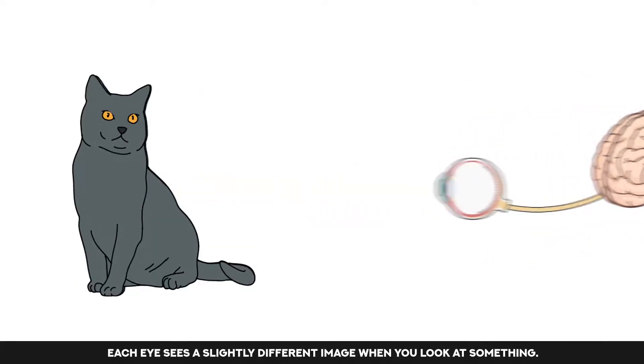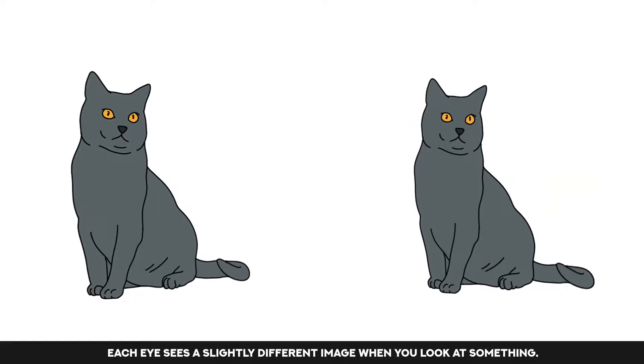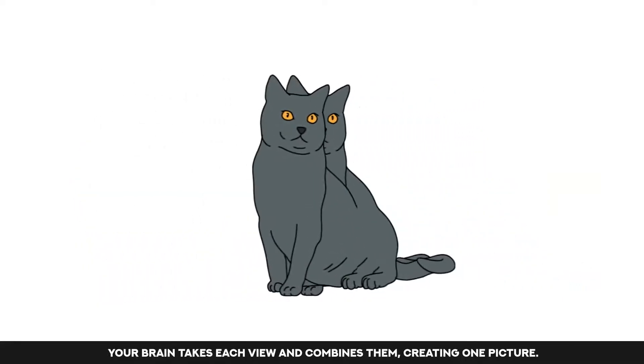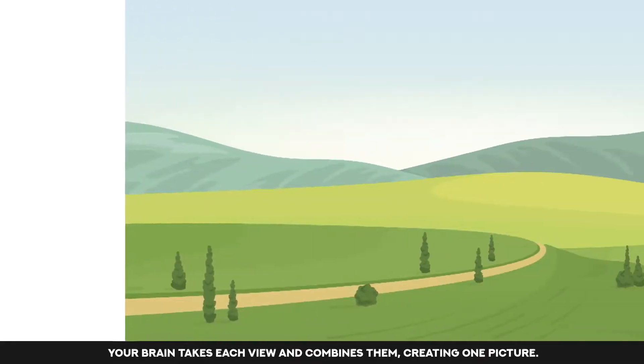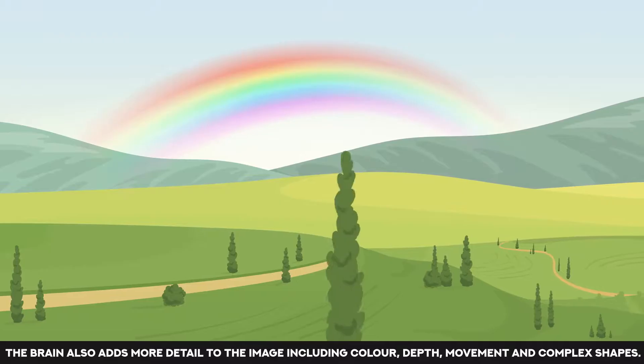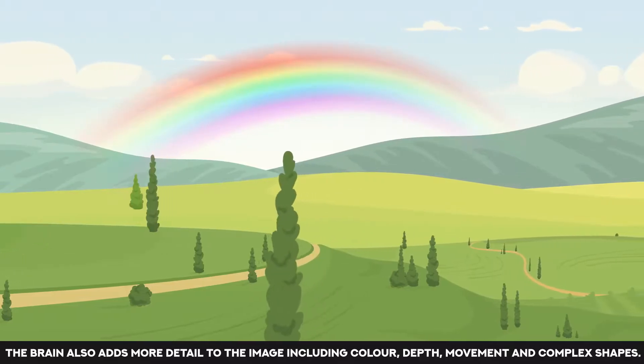Each eye sees a slightly different image when you look at something. Your brain takes each view and combines them, creating one picture. The brain also adds more detail to the image, including colour, depth, movement and complex shapes.